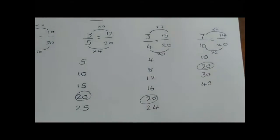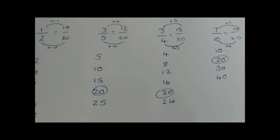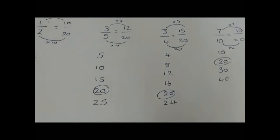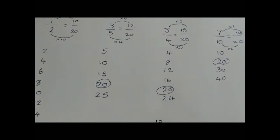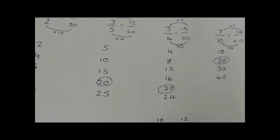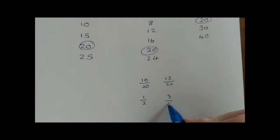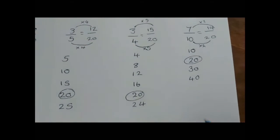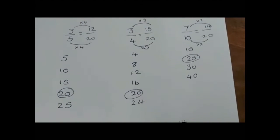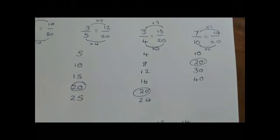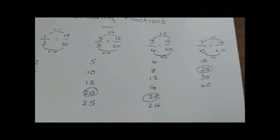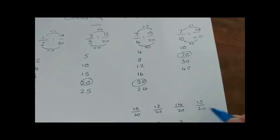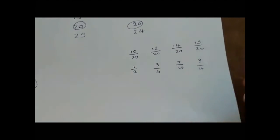Now I've got 10 over 20, 12 over 20, 15 over 20, and 14 over 20. Putting those in ascending order from smallest to largest: 10 over 20 (one half) is the smallest, then 12 over 20 (three fifths), then 14 over 20 (which is the same as 7 over 10), and finally 15 over 20 (which is the same as 3 quarters). There we go — I've now ordered my four fractions.